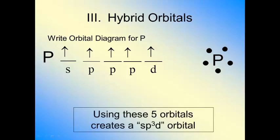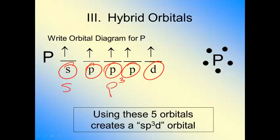This new shape is what's called an sp3d hybrid orbital, because it's using one s, three p's, and one d when it's doing this. So it's sp3d.